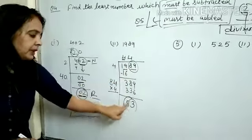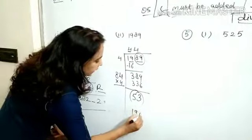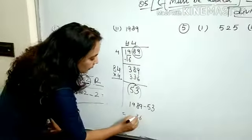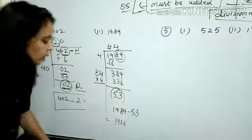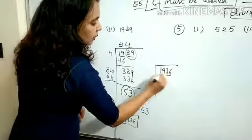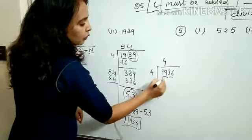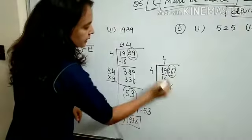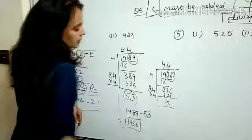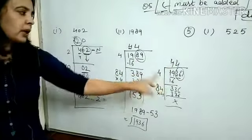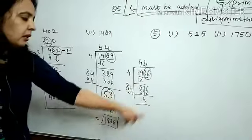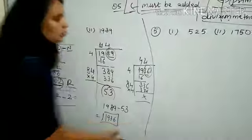Next step: subtract the remainder from the original number. 1989 − 53 = 1936. Check: is 1936 a perfect square? Make pairs: 4×4=16, bring down 36, double 4 to get 8, try 43×3=129 — remainder 0. So 1936 is a perfect square — it is the square of 44. So for 'must be subtracted,' find the remainder using division method and subtract it from the original number.